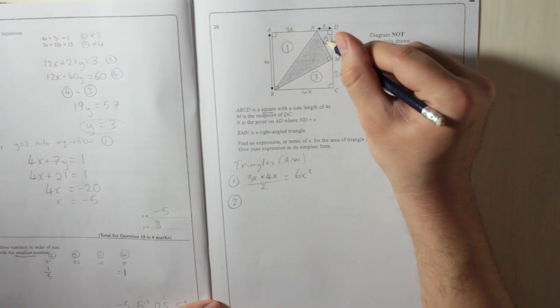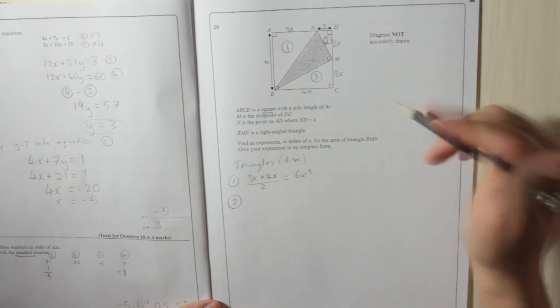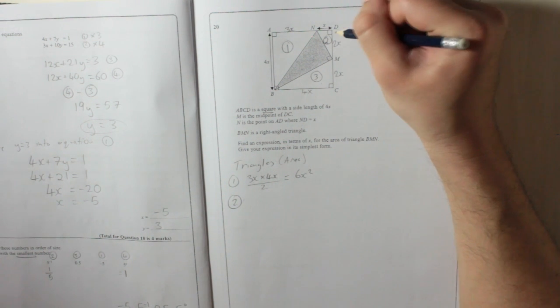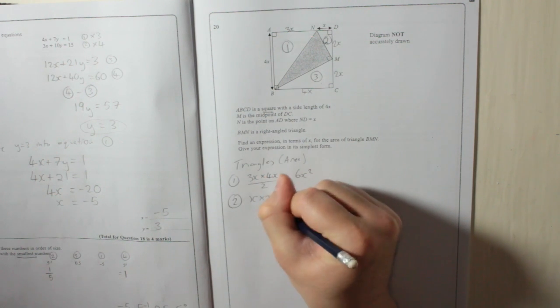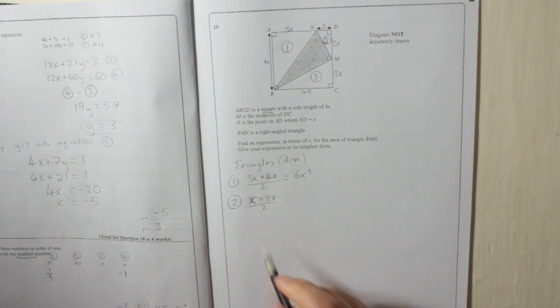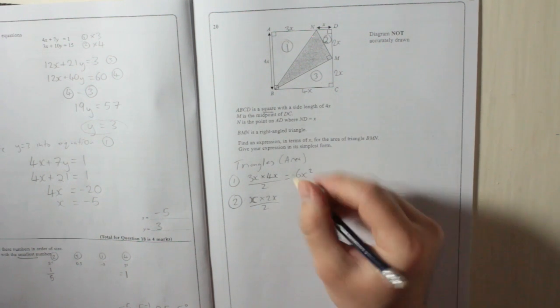Triangle 2. Let's triangle 2 over here. Doesn't matter if you call that one 1, that one 2, that one 3, doesn't matter. Just as long as you understand what you're doing. So this one's going to be X times the 2X divided by 2. So, X times 2X divided by 2. So, X times 2X is 2X squared, divided by 2, 1X squared.